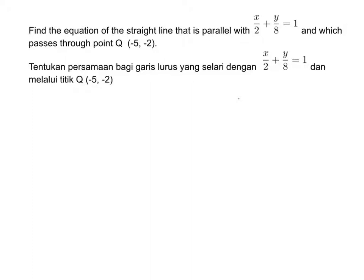Find the equation of the straight line that is parallel with x/2 + y/8 = 1 and which passes through point Q (-5, -2).